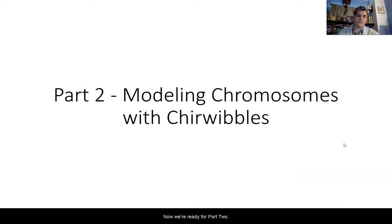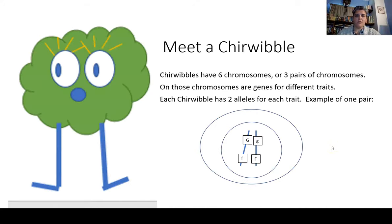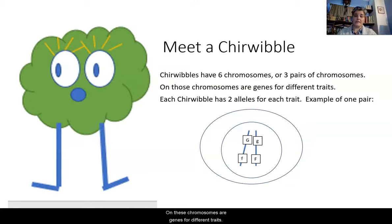Now we're ready for part two. We're going to take the vocabulary that we just learned and apply it with modeling chromosomes with cherwibbles. A cherwibble is a fictional character that has six chromosomes, or three pairs of chromosomes — six chromosomes total, three pairs. On these chromosomes are genes for different traits. Each cherwibble is going to have two alleles for each trait.